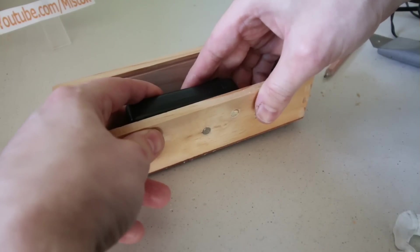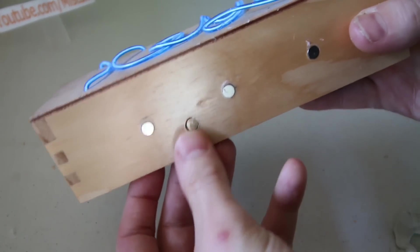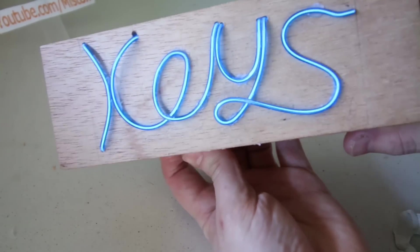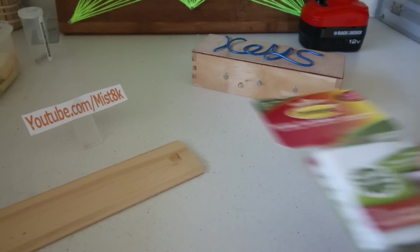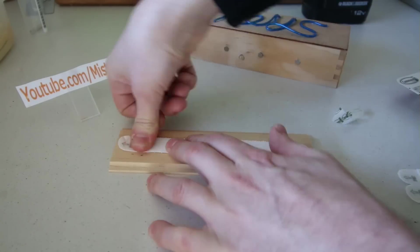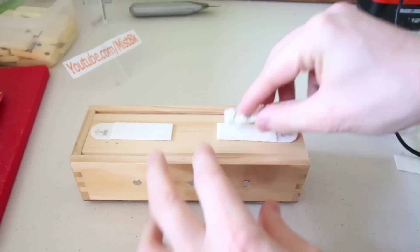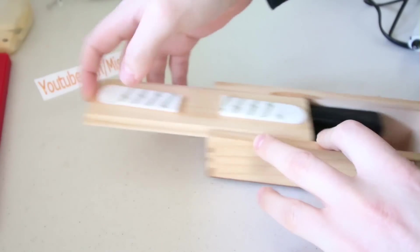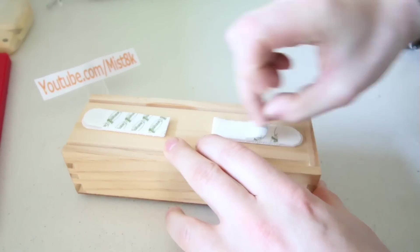To attach it to the wall I simply added some of these adhesive picture hanging strips to the lid. Just need to slide the lid back on and stick it to the wall and we're done.